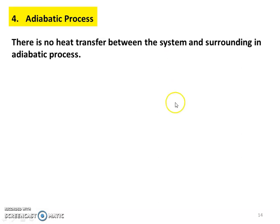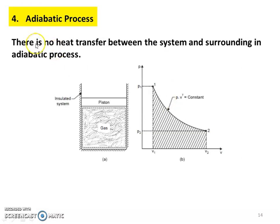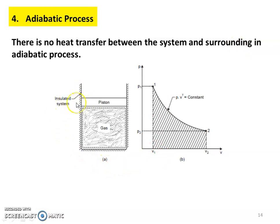Adiabatic process - in any adiabatic process, there is no heat transfer between the system and the surrounding. This is an insulated cylinder. How to achieve adiabatic? The cylinder is insulated.